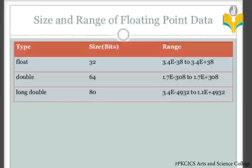Next, we have floating data types. When we store fractional values, we use float. For example, if we declare: float a = 1.23, that means we are storing a floating type variable — fractions and real numbers.